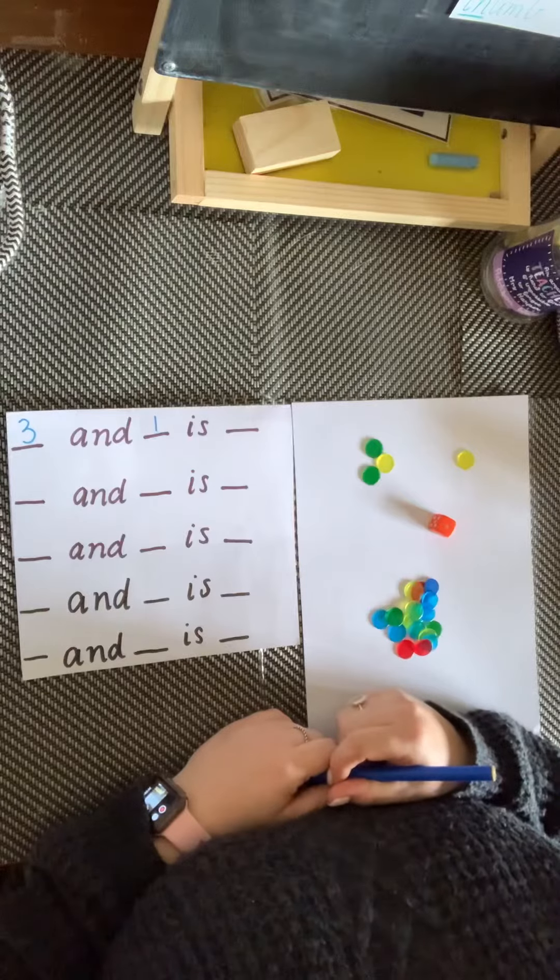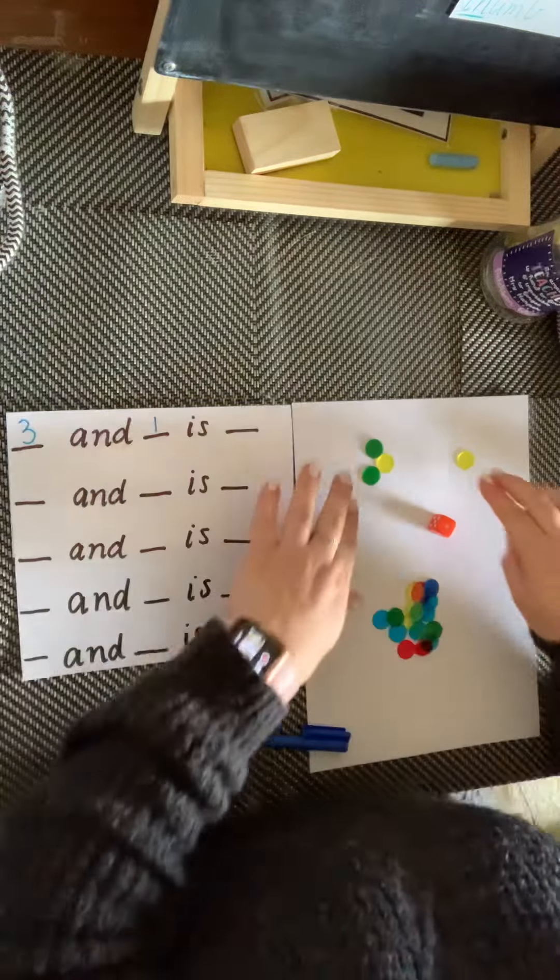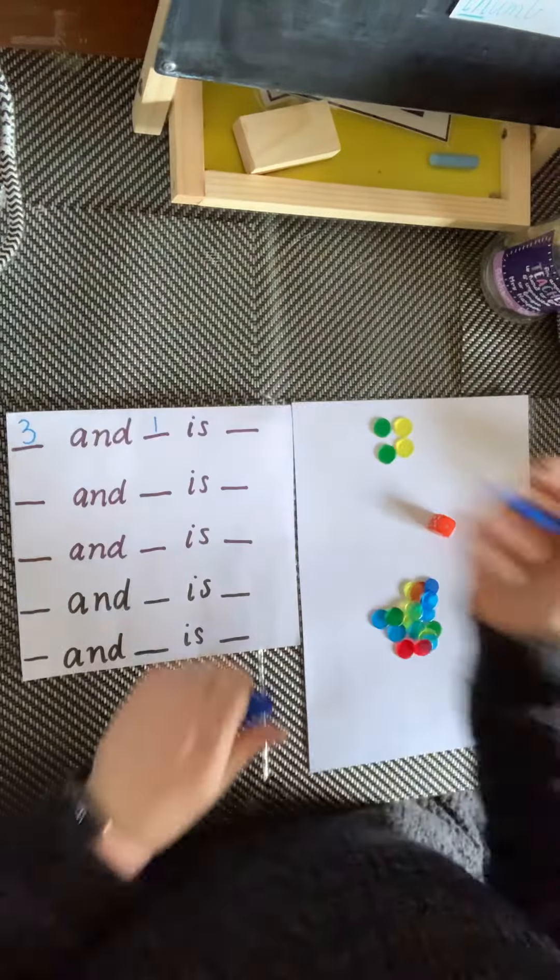Now we're going to work out how many there are altogether. Three and one is, push them together. One, two, three, four. Is four.